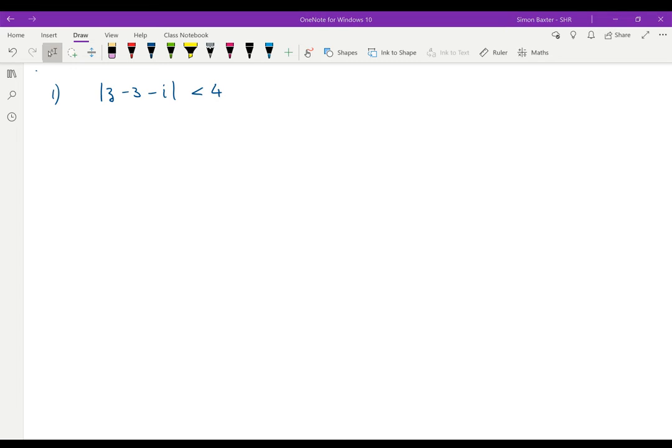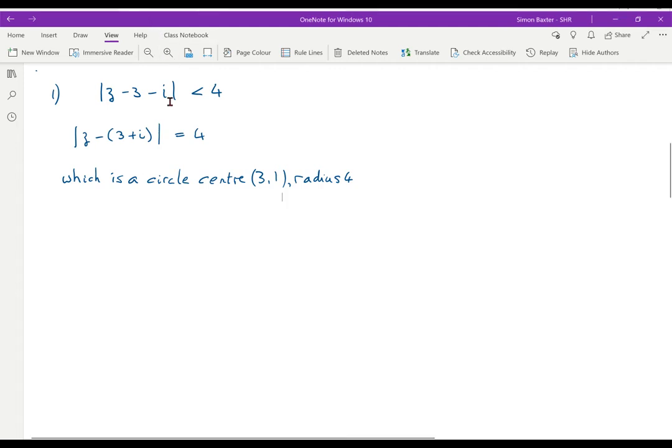In order to look at this we need first of all to look at the equality. This gives us mod z minus 3 plus i equals 4. We know or we should know by now that this is a circle centre 3, 1, radius 4.